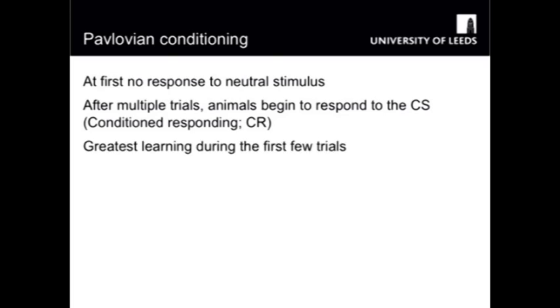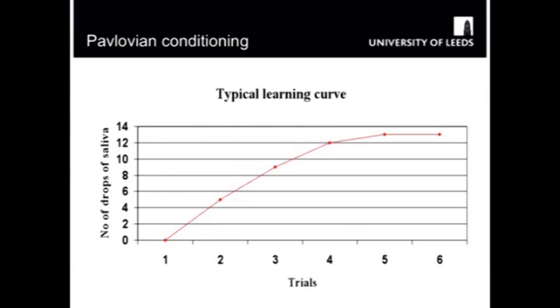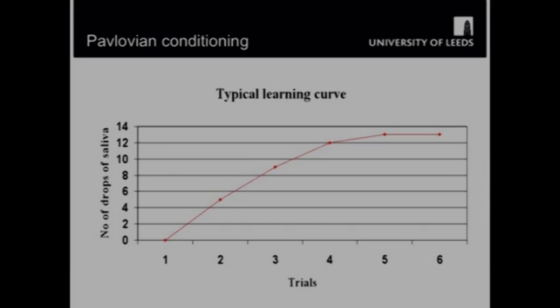The animal begins to change its behaviour during that CS — that previously neutral stimulus takes on some new meaning. The greatest learning occurs during the first few trials, and here you can see a typical learning curve. Initially, animals show no conditioned response, and then over time the conditioned response increases, with the greatest learning during the first few trials. Then learning reaches an asymptote — this is where the curve flattens off and no more learning is possible.